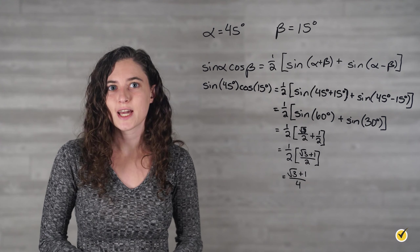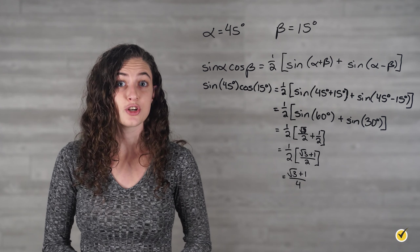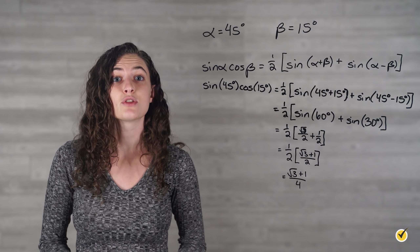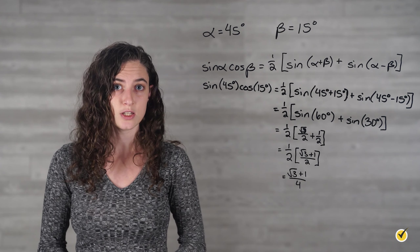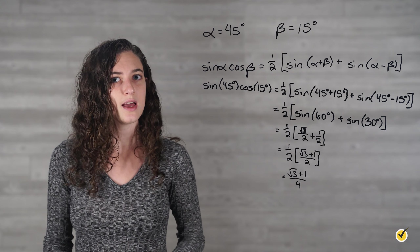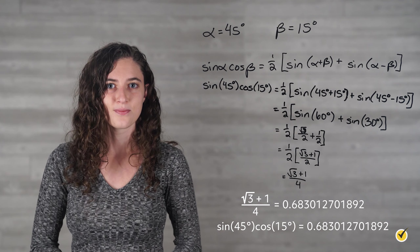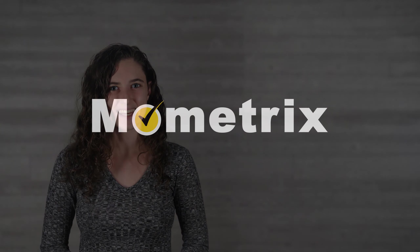We can check our answer on a calculator by evaluating our answer and then finding the approximate value of the sine of 45 degrees times the cosine of 15 degrees. In both cases, we get the same result. These formulas can also be used to turn products into sums or sums into products, especially when angles are given as variables. Hopefully this review was helpful and you're well on your way to mastering these trig formulas. Thanks for watching and happy studying!